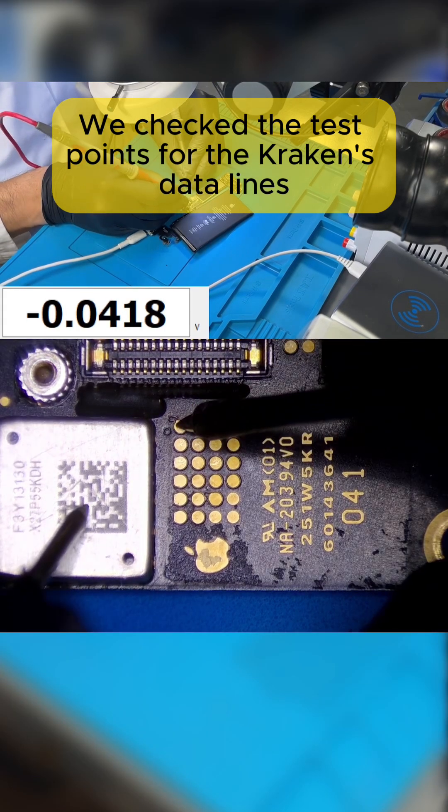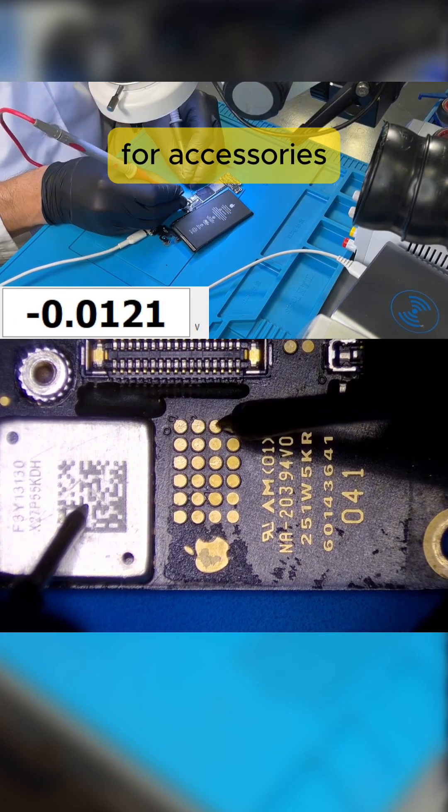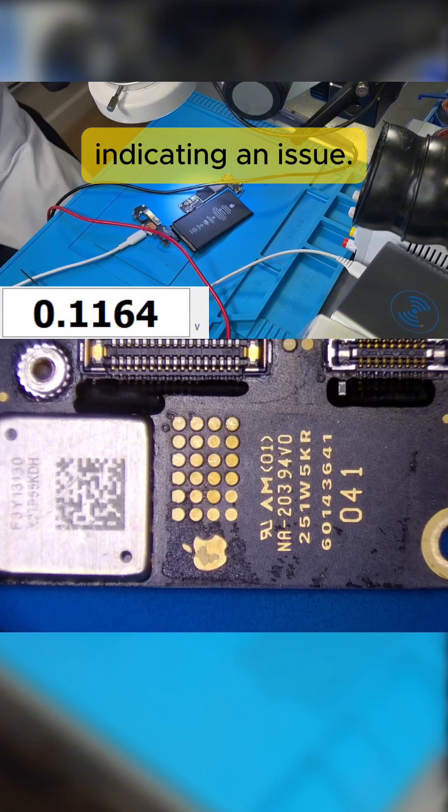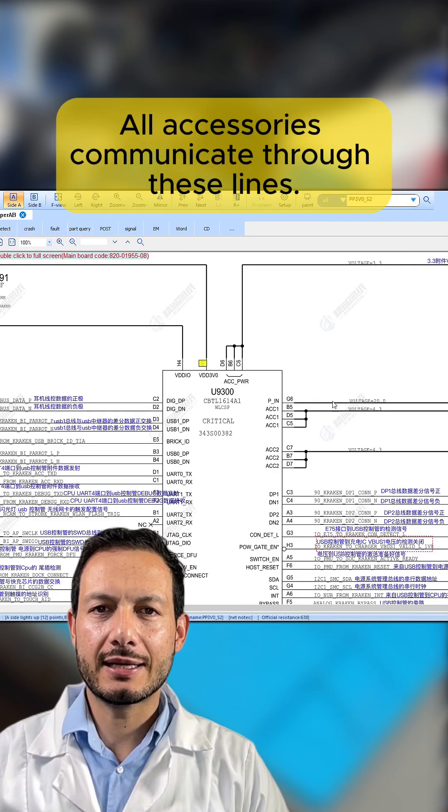We check the test points for the Kraken data lines for accessories and notice we're missing the three volt output indicating an issue. All accessories communicate through these lines.